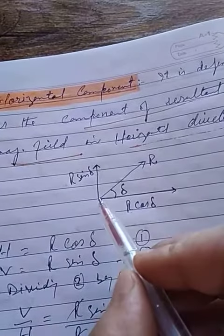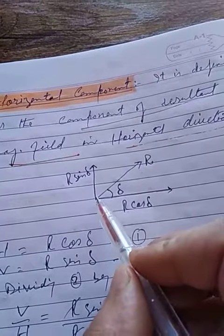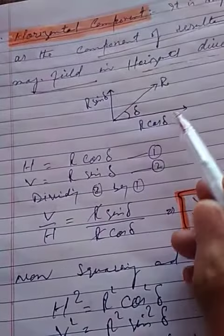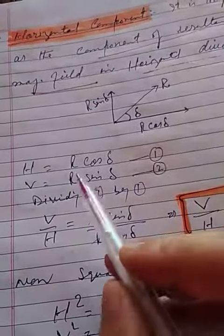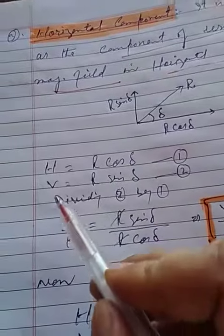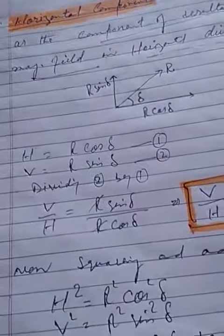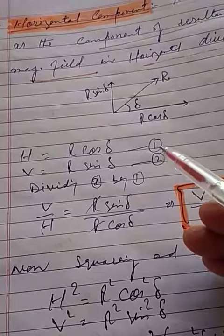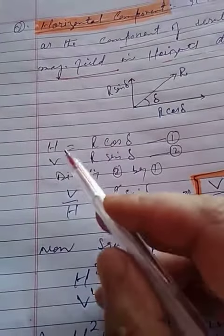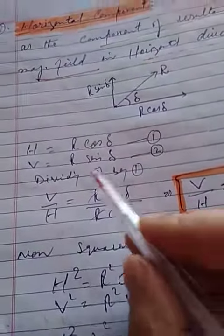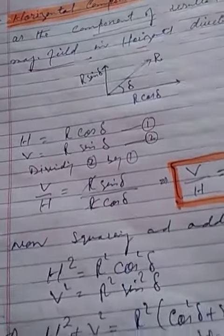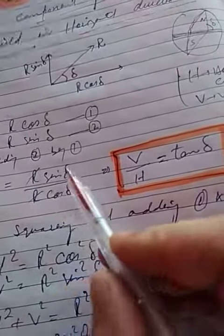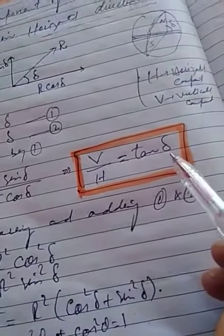The vertical component V is R sin δ. Now, dividing equation two by equation one — V divided by H equals R sin δ divided by R cos δ. The R cancels out, so V/H equals sin δ divided by cos δ, which equals tan δ.